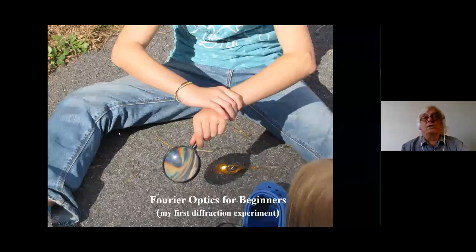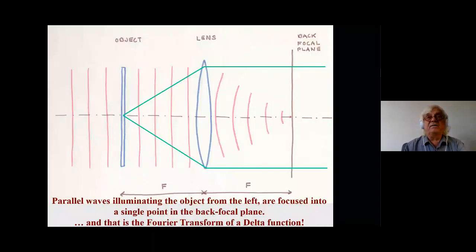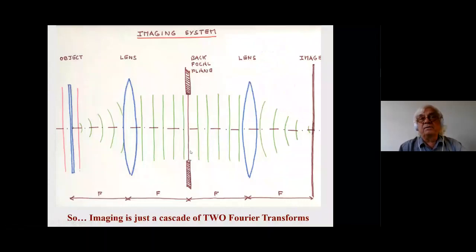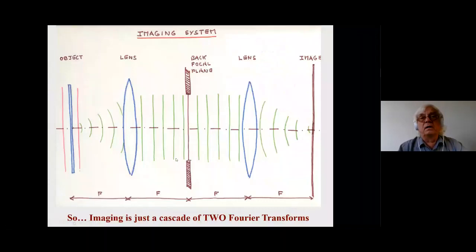So this is a Fourier transform machine that we all started playing with as children. If you have two of these Fourier transform machines and an object in the front focal plane, that point in the object becomes a plane wave in the back focal plane, and that plane wave becomes a point in the image. This is a one-to-one imaging device and symbolizes all kinds of imaging machines — a cascade of two Fourier transforms.